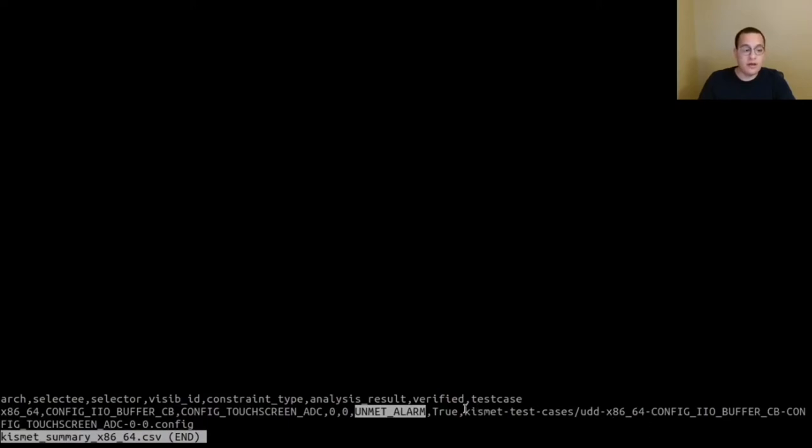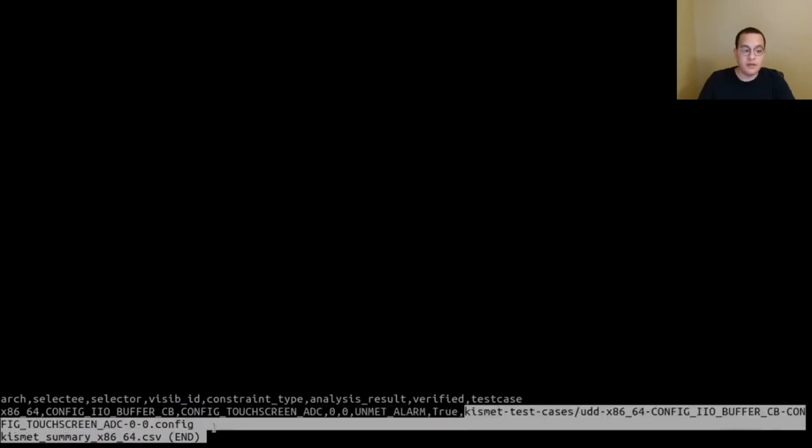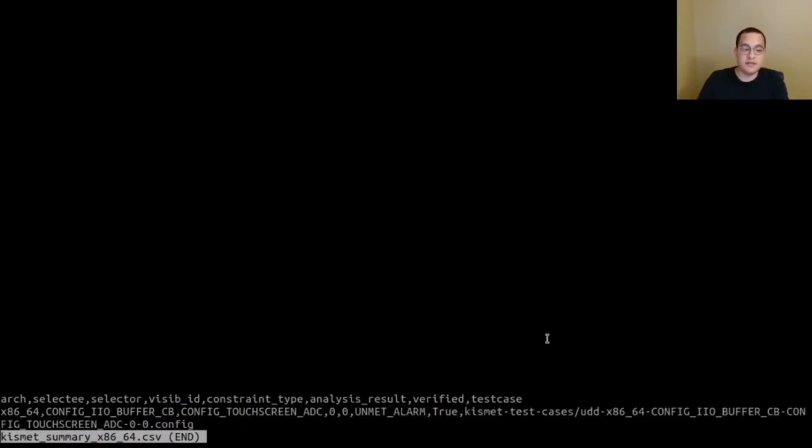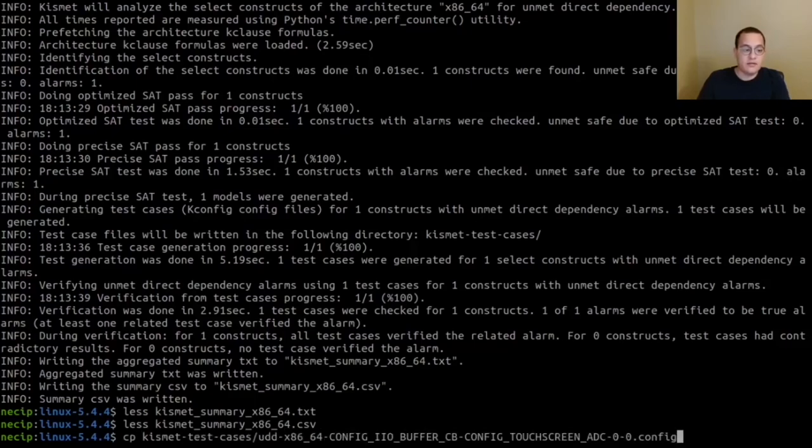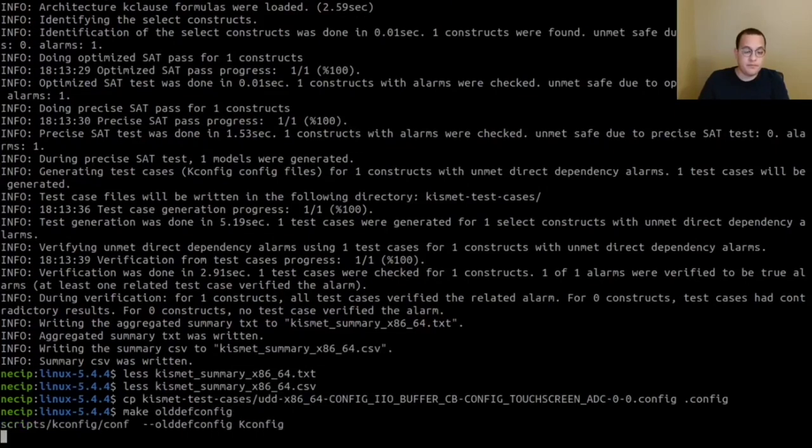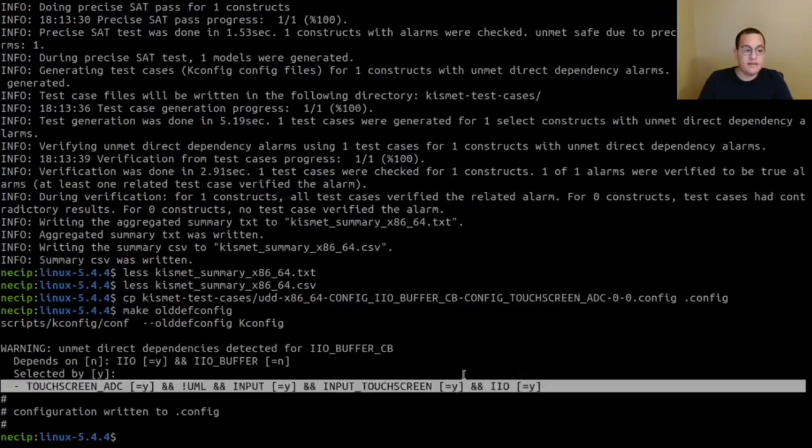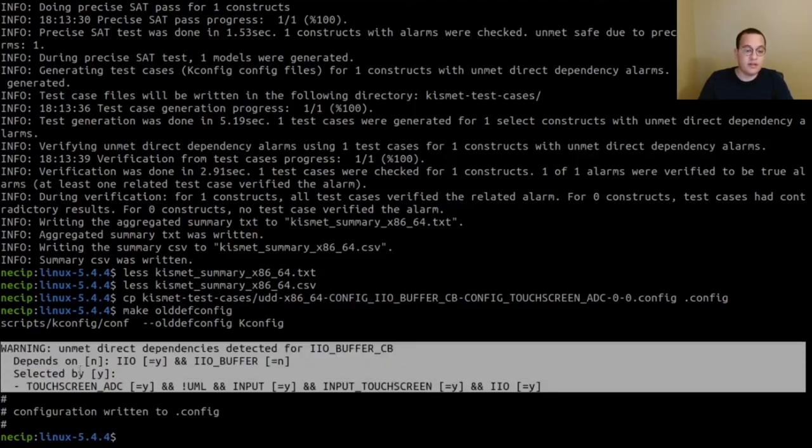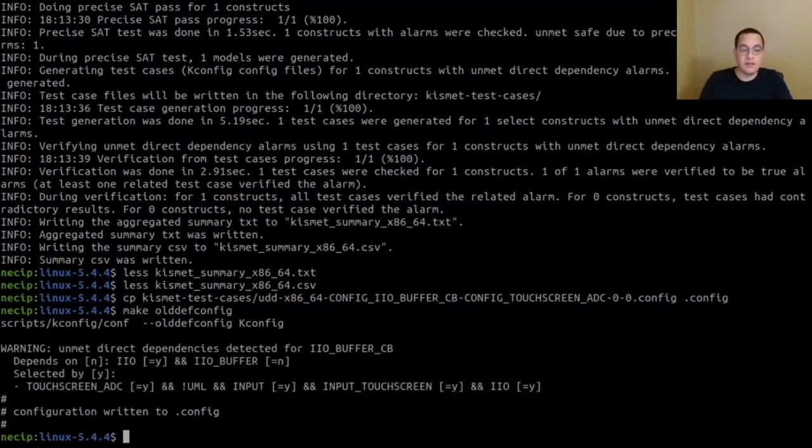Also, it will include the path to the test case, which we can use to replicate the bug. Let's now copy the test case. And let's copy the config file and try to run this using the build system. When we run the test case, KBuild will warn about the unmet dependency. Here you can see the unmet dependency bug more quickly. And when we compile, we will end up with a build error for this specific unmet dependency bug.